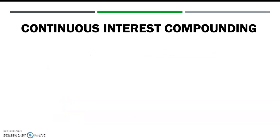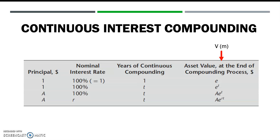To sum up, from the hypothetical case we can make a generalized case. We get the general formula for continuous interest compounding as follows. We started with the hypothetical case and can modify the principal, the nominal rate, the years of continuous compounding, and the end asset value. This is the general formula for continuous interest compounding.